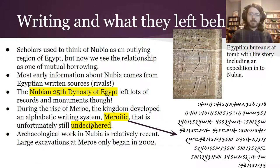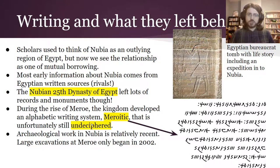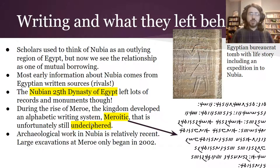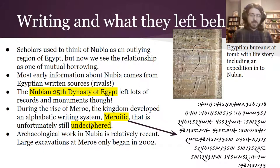In terms of what they left behind, scholars used to think of Nubia as just an outlying region of Egypt — in part because we only had evidence from Egyptian sources to understand Nubian history. There are also issues of racism being part of how those early scholars saw this area. Egypt was perceived as less dark-skinned, so scholars assumed Egypt was the center of civilization and Nubia was just copying them. You can see how the people studying history brought their own beliefs, resulting in us knowing less about Nubia than we might otherwise know.